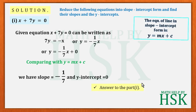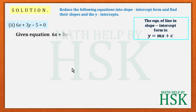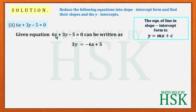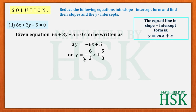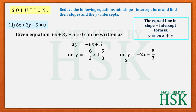Now taking the second part, we apply a similar process. I write the term of y on the left-hand side and take the term of x and the constant term to the right-hand side. Then I cross-multiply the coefficient of y to the right-hand side to get y = -6/3 x + 5/3. Dividing, -6/3 simplifies to -2.